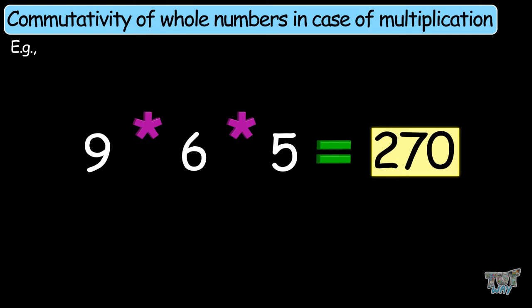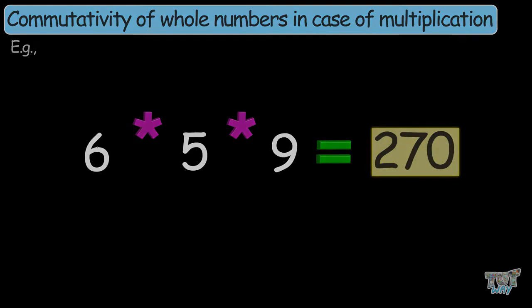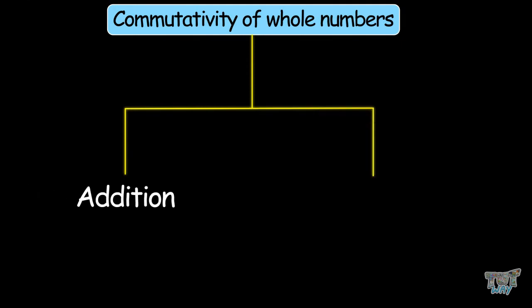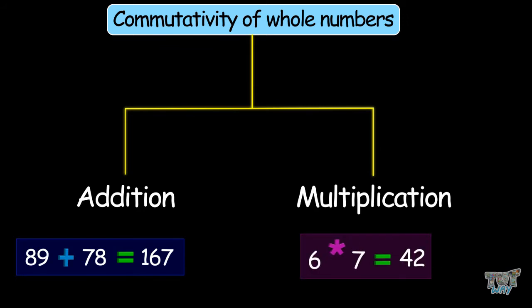So we proved that we can multiply whole numbers in any order, and this property is called the commutative property of whole numbers over multiplication — that is, you can multiply any whole numbers in any order and the answer will still be the same. We learned two interesting properties: addition and multiplication are both commutative for whole numbers. You can add or multiply in any order.